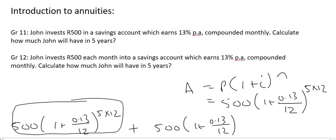The second payment that he makes will be in the account for 59 months because 5 times 12 is 60. So this one would be 59.